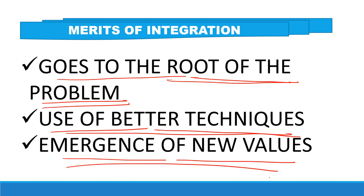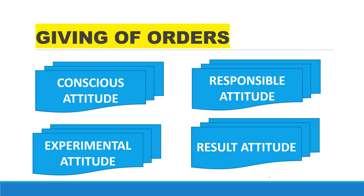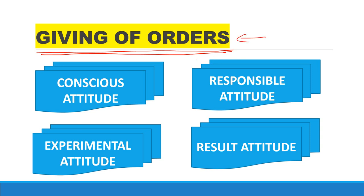So that was the concept of conflict and integration — according to her, integration is the best way to resolve a conflict. Now moving ahead to her second concept, that is giving of orders. Mary Parker Follett gave four steps of giving of orders. The first step was a conscious attitude, second was a responsible attitude, third was an experimental attitude, and fourth was a result attitude.